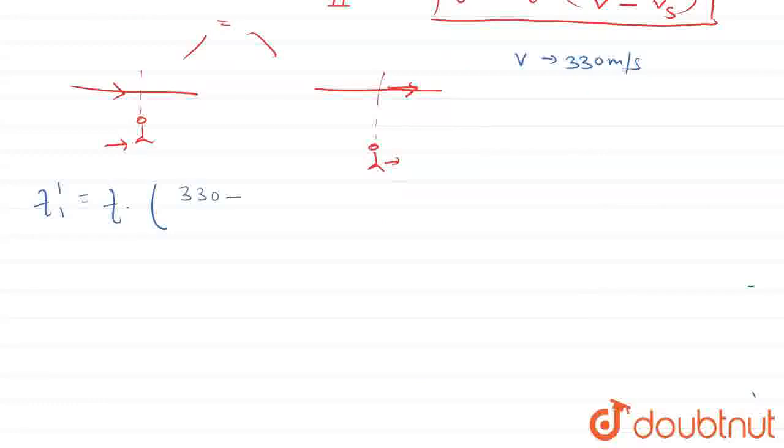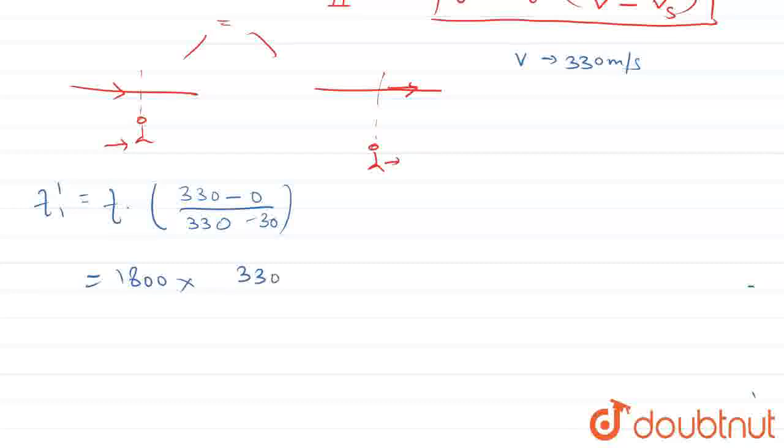330, observer is standing so minus 0, divided by 330 minus 30, is equal to 1800 into 330 divided by 300. 0s cancel, 3 into 18 goes to 6, is equal to 1980 f1 dash. Now similarly we will,